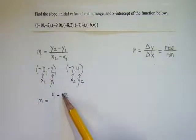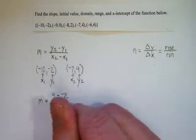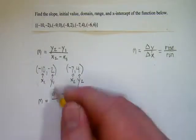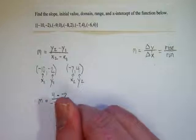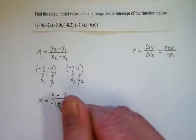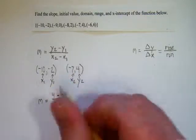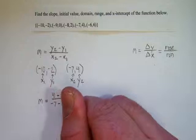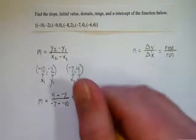Over x2, which is negative 7, minus x1, which is negative 10. So again, note I have minus a negative. That's okay, that can happen.